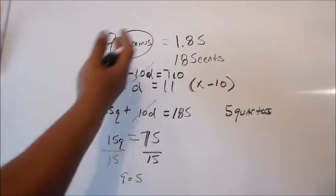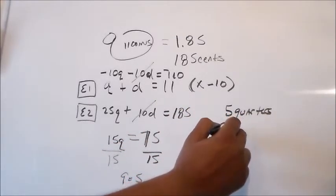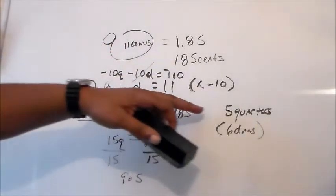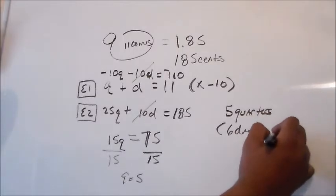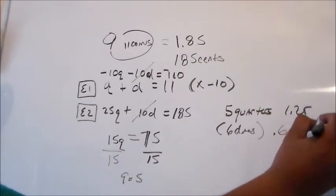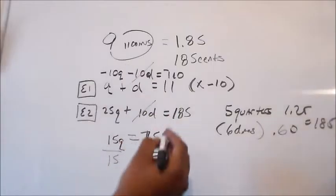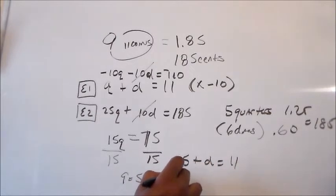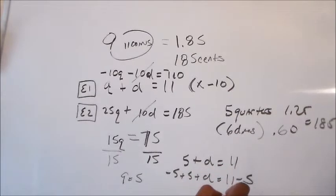Now if there's 11 coins, we have 5 quarters, we can just go ahead and use our reasoning and we know that there's 6 dimes. Because if there's 11 coins total, we found out that there was 5 quarters. You know we know that that's 60 cents plus 125, so 60 cents plus a dollar and 25 cents is equal to 185. Or what we could do is we could take Q and plug it into equation 1, which is 5 plus D equals 11. Subtract 5 from both sides and D, the number of dimes, would equal 6.